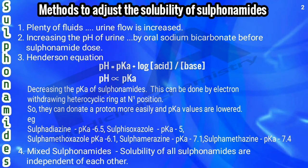We can decrease the pKa of sulfonamides by introducing an electron-withdrawing heterocyclic ring at the N1 position — this allows the drug to donate a proton more easily, lowering the pKa value. Examples: sulfadiazine pKa 6.5, sulfisoxazole pKa 5.0, sulfamethoxazole pKa 6.1, sulfamerazine pKa 7.1, sulfamethazine pKa 7.4. The last method is to use a mixture of sulfonamides — mixed sulfonamides — which reduces the chances of crystalluria.